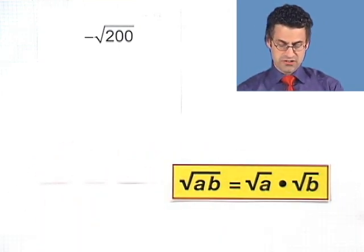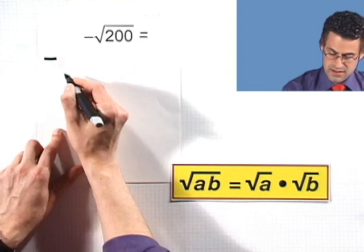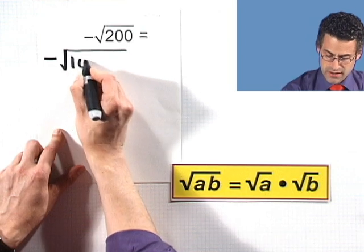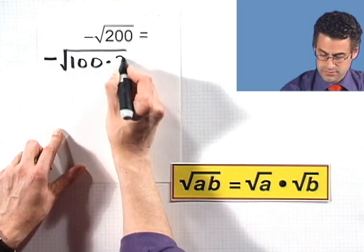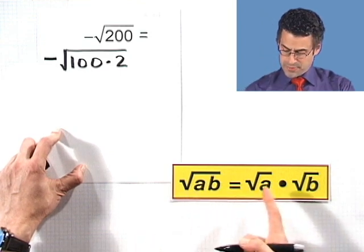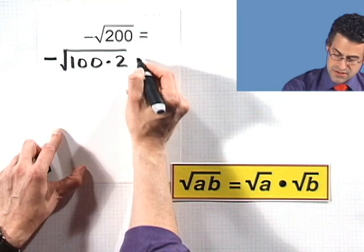Well the easiest way to factor 200, put that negative sign way out in front, is to say, well, that's just 100 times 2. But now I can use this property. And notice that I have the square root of something times something.